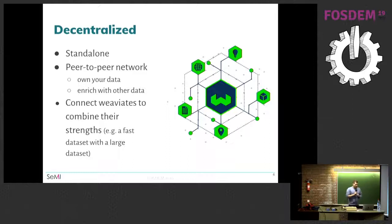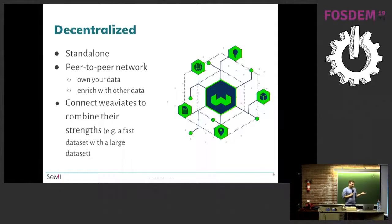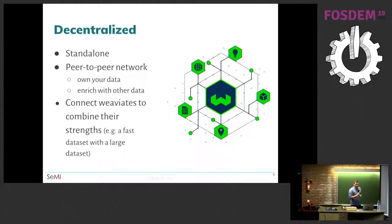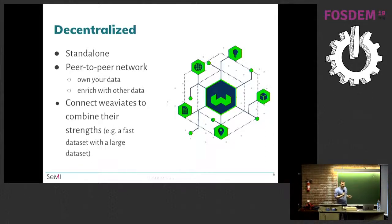The next word in the definition is 'decentralized.' In order for something to be decentralized you need many different things you can either combine into something centralized or spread out. You can operate VV8 completely standalone, but you can also establish a peer-to-peer network of different VV8 instances. One reason you'd want to do that is it gives you the ability to completely own your own data — you don't have to send private data away, which matters for GDPR protections.